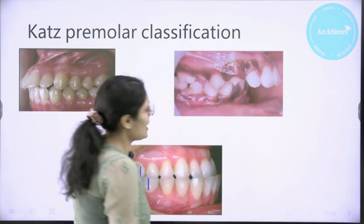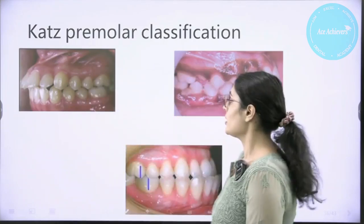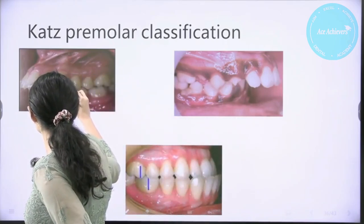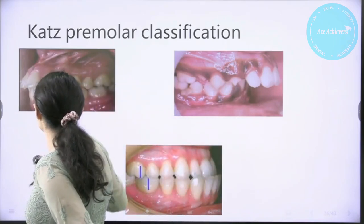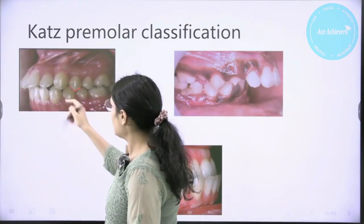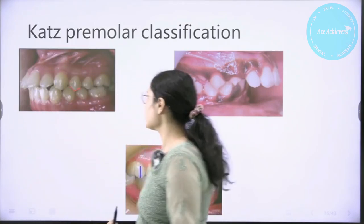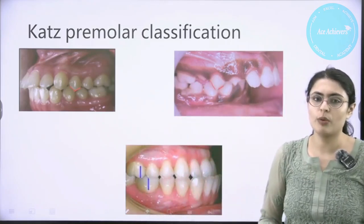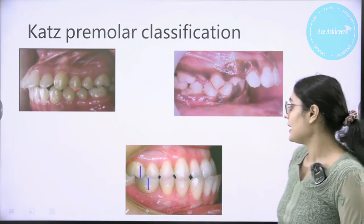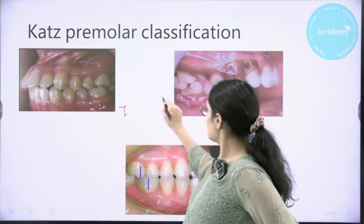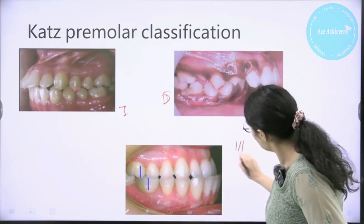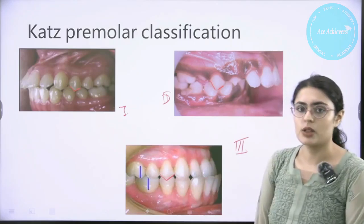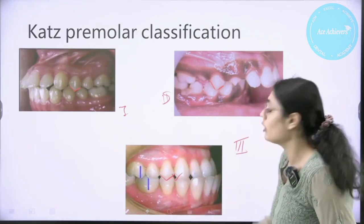In Cats' premolar classification, importance is placed on the first premolar. In Class 1, the maxillary first premolar occludes in the embrasure formed by the mandibular first and second premolars. In Class 2, the maxillary first premolar lies anterior to that embrasure. In Class 3, the maxillary first premolar lies distal to the embrasure formed by the mandibular first and second premolars.